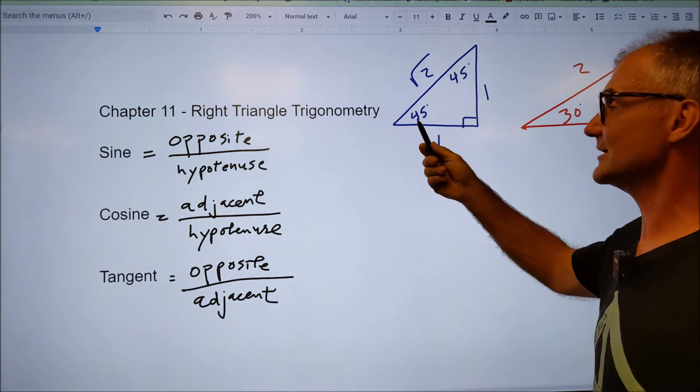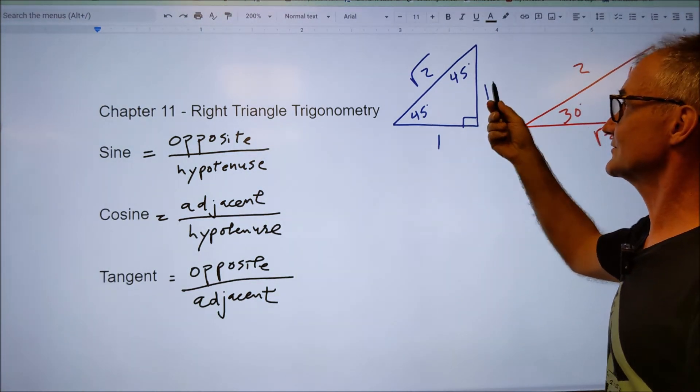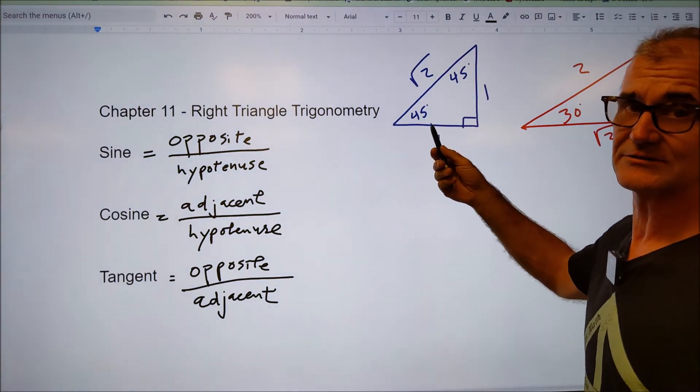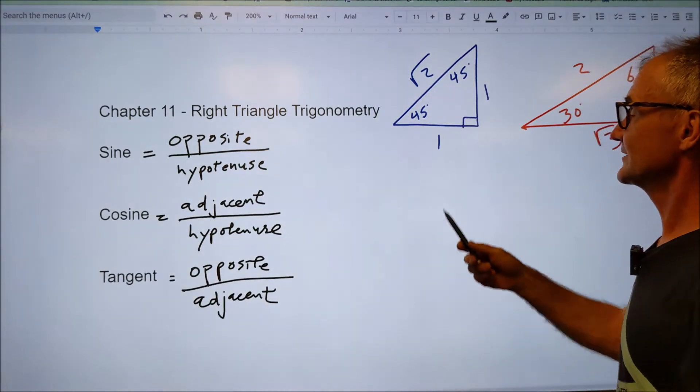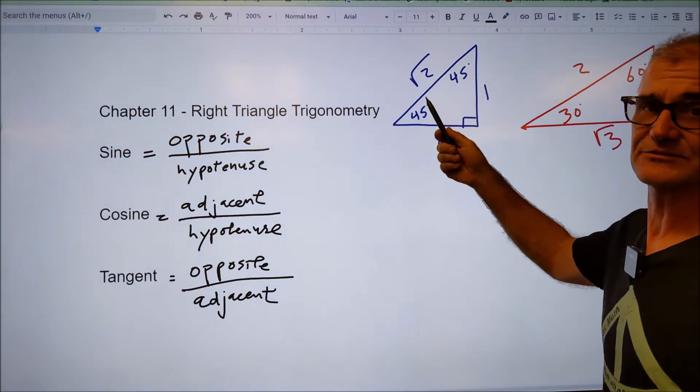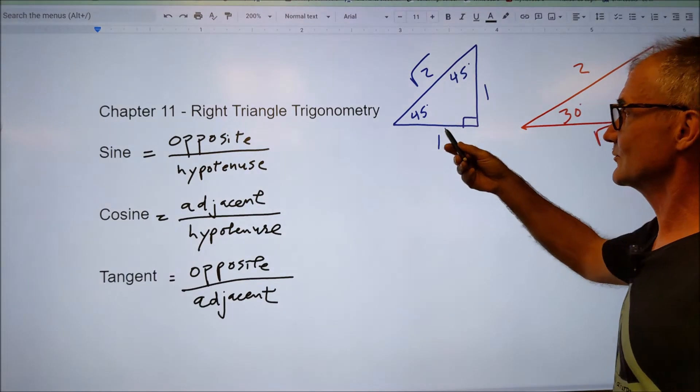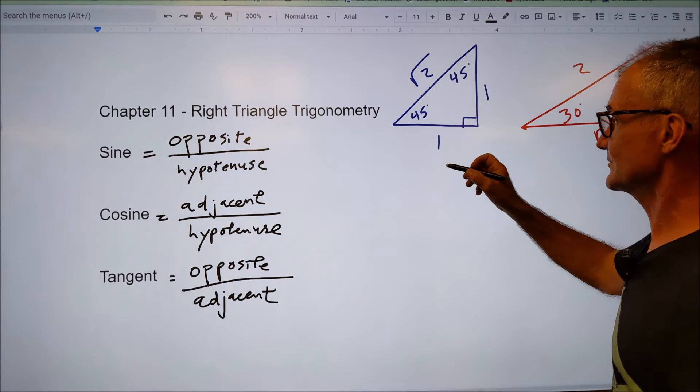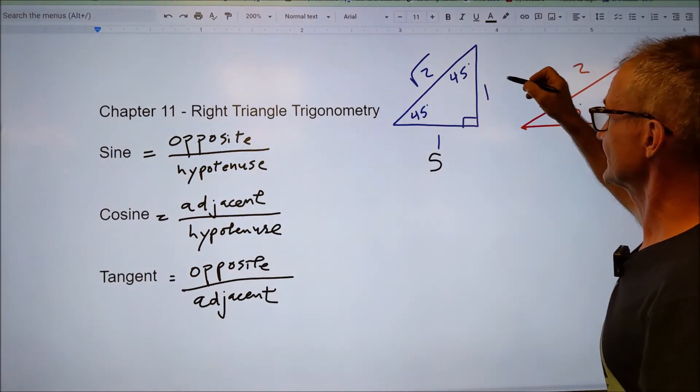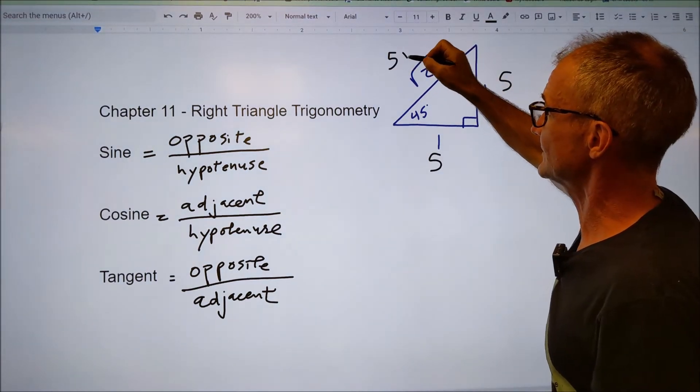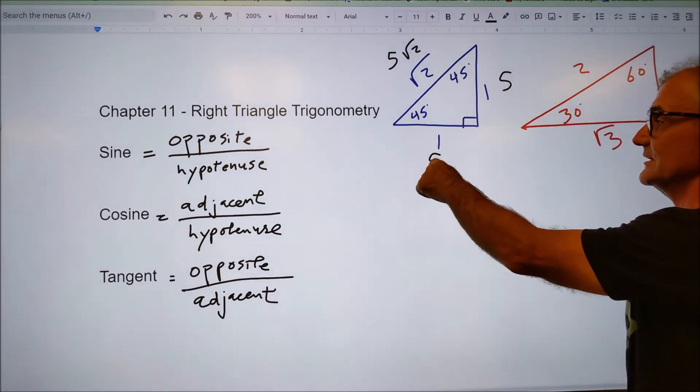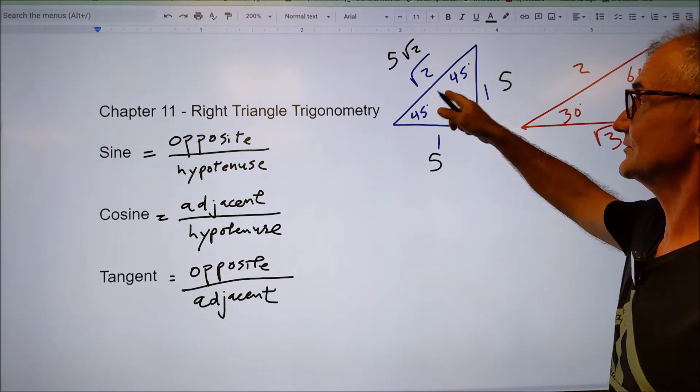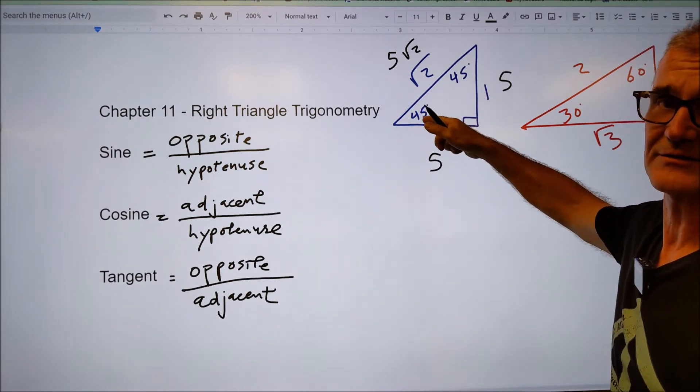That's an isosceles right triangle. Isosceles means two legs are the same. Right means it has a right angle. Again, this is only right triangles that we're looking at. The ratios of sides in any isosceles right triangle will always be the same. One leg is one. The other leg is one. The hypotenuse is root two. This could be five. If this were five, this would be five, and this would be five root two. If this was 23, this is 23. This is 23 root two, and that's always going to be true when the angles are 45 and 90.